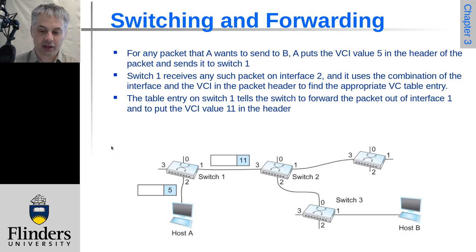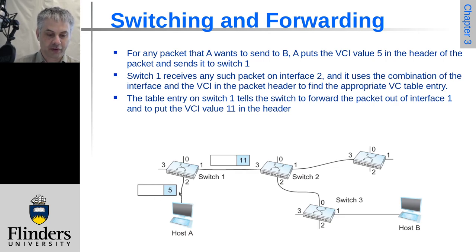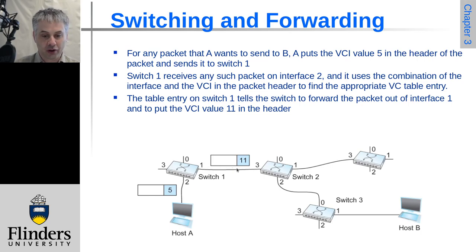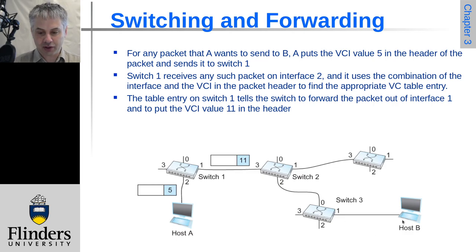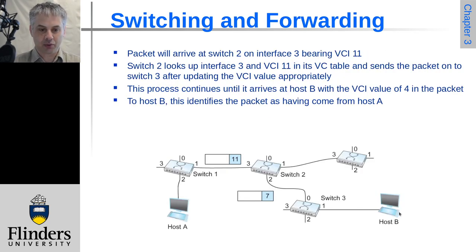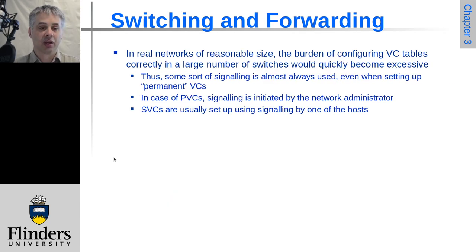Now for any packet sent from A to B, the packets or frames are tagged with a VCI — in the first case, five, which is the required incoming VCI on switch one. When switch one forwards it, it replaces five with eleven, because that's what switch two needs in order to correctly handle that packet. This continues throughout the network: it comes in as eleven and goes out as seven on switch two. Eventually it goes out on port one to host B. Since host B is not a switch, switch three doesn't necessarily need to tag the virtual circuit, though this depends on the network type.